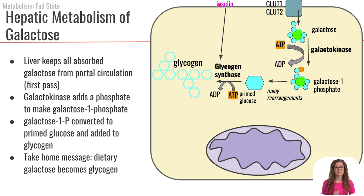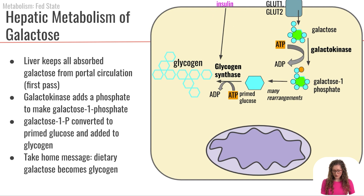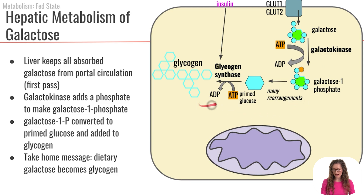This glycogenesis is stimulated by insulin, and of course insulin is present because we are in the fed state. So the overall take-home message is that the galactose we get from our diet goes to the liver and ultimately becomes glycogen.